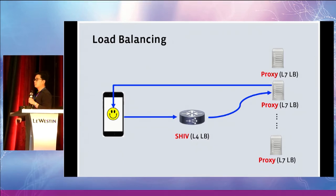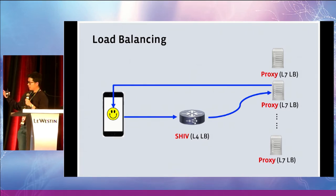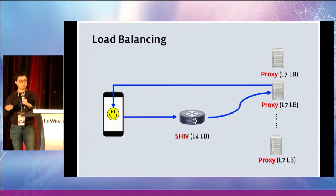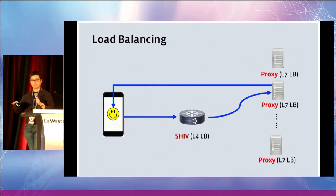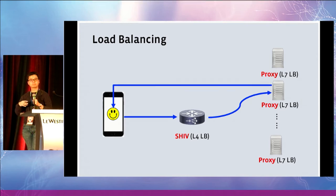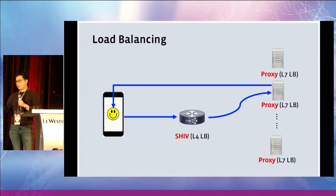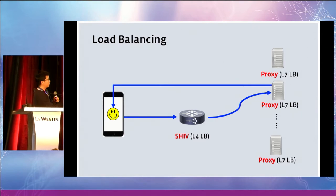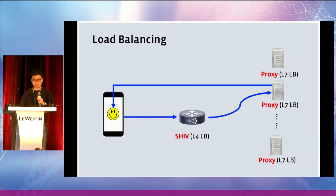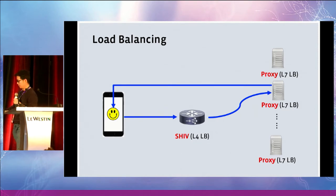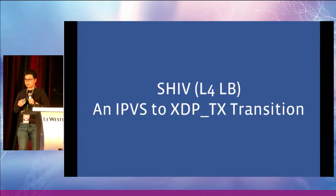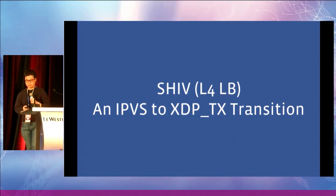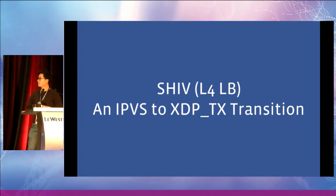I want to recap how people usually do load balancing on web traffic. Incoming requests hit our L4 load balancer first, which looks at the TCP/IP header, finds a 5-tuple, and does consistent hashing to find a proxy — our L7 load balancer — and sends end-user traffic to it. On the return path, the proxy responds directly to the end user without going through the L4 load balancer. We call this L4 load balancer shift. We used to use IPVS for L4 load balancing, but we've moved to XDP to get better performance and throughput.